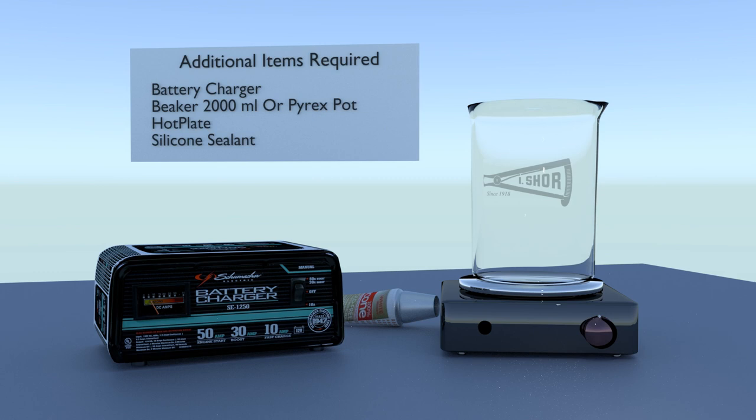Additional items required but not supplied with the Simplicity include: battery charger. We recommend the Shoemaker SE1250 battery charger, available through Amazon. Hot plate, beaker - 2000 milliliter or larger. Alternatively you can use any Pyrex pot made for use on a stove top. Silicone sealant.